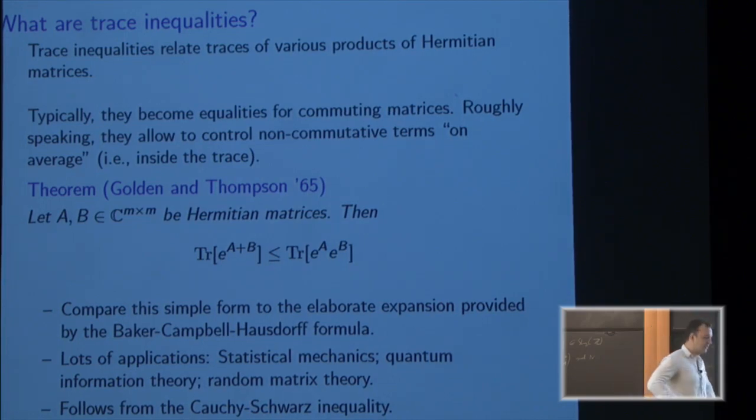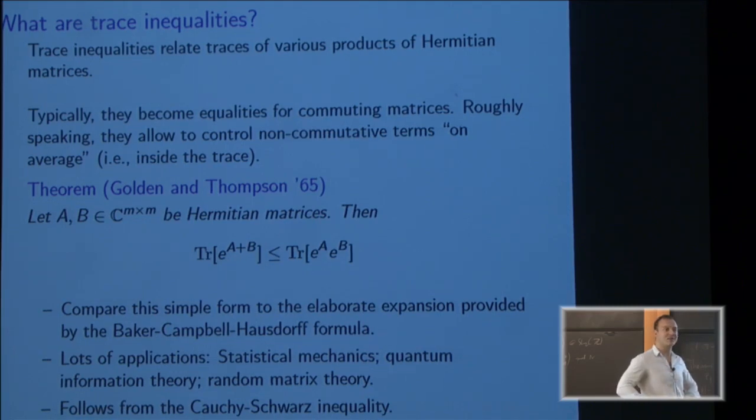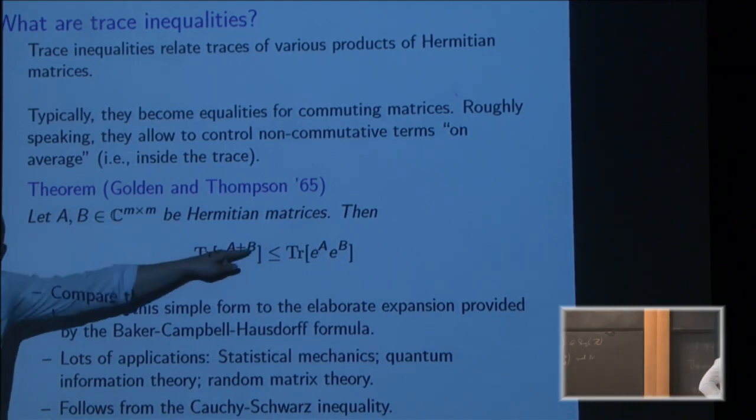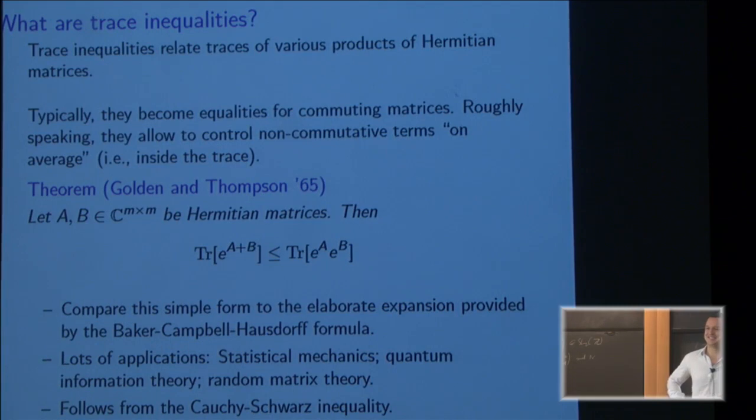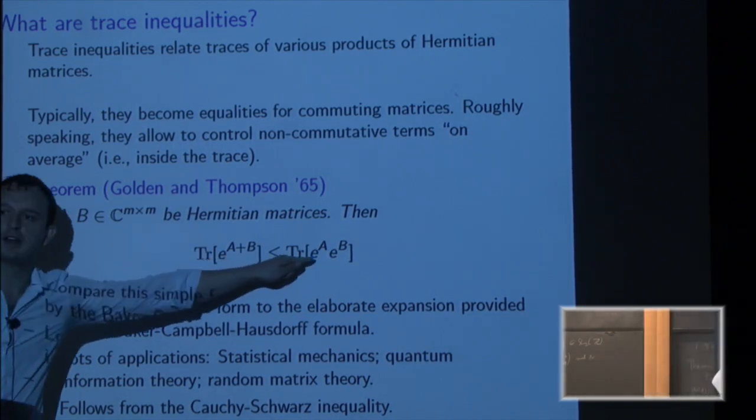Okay, so this inequality has lots of applications. Golden and Thompson came from statistical mechanics. That's where it originated, but it's also found applications in quantum information theory, and then random matrix theory. And some of the talk will be about multivariate trace inequalities, where the goal is to put more matrices up here. Okay, not just two more.